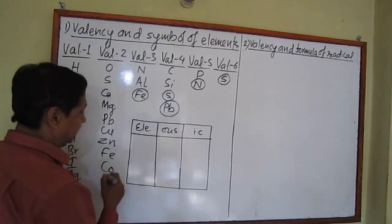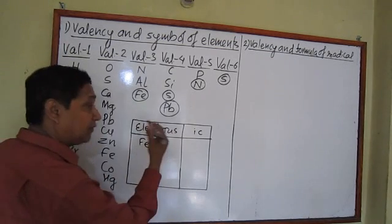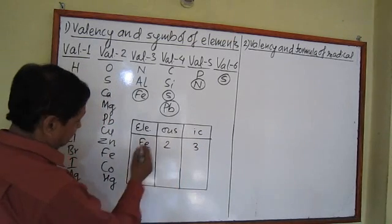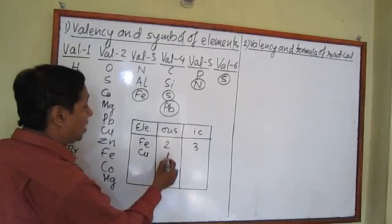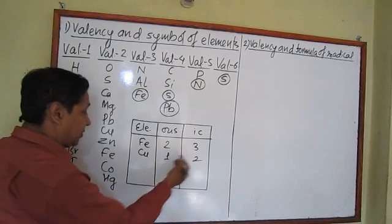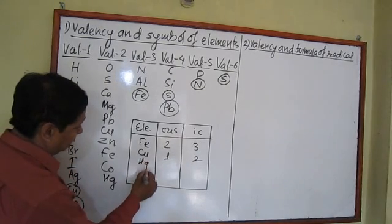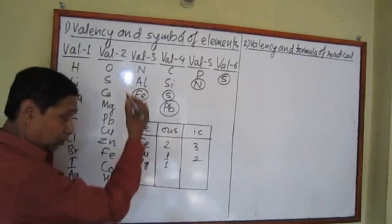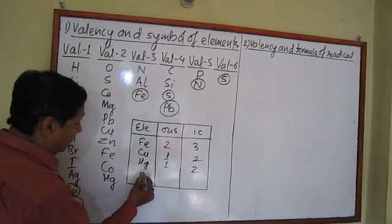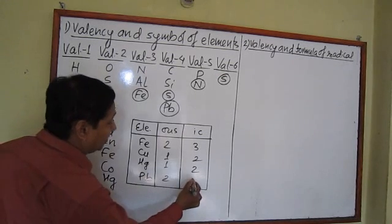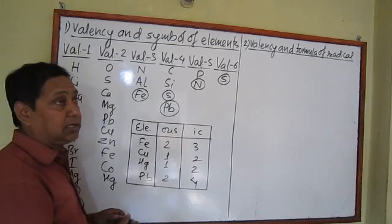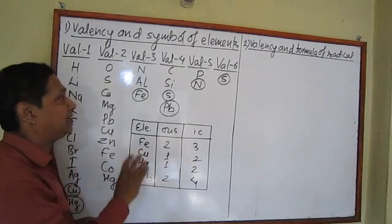In the case of iron: ferrous has valency two and ferric has valency three. Copper has two different valencies — sometimes one, sometimes two. Mercury: mercurous has valency one and mercuric has valency two. Lead: plumbous has valency two and plumbic has valency four. The suffix '-ous' represents the lesser valency and '-ic' represents the greater valency.